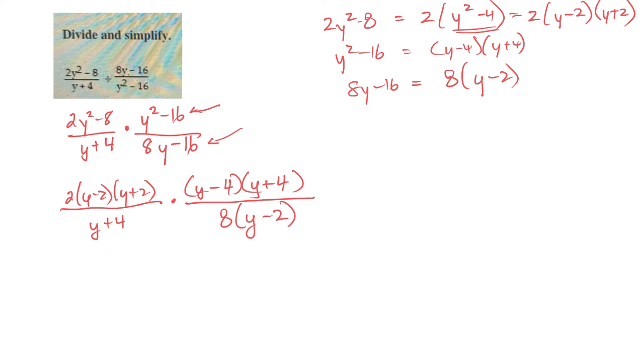Now let's look for factors of 1 that I can take out. Anything that's the same on top and bottom goes. y plus 4, y plus 4. y minus 2, y minus 2. Oh, and the 2 and the 8. 2 will go into itself once. And 2 will go into 8 4 times.